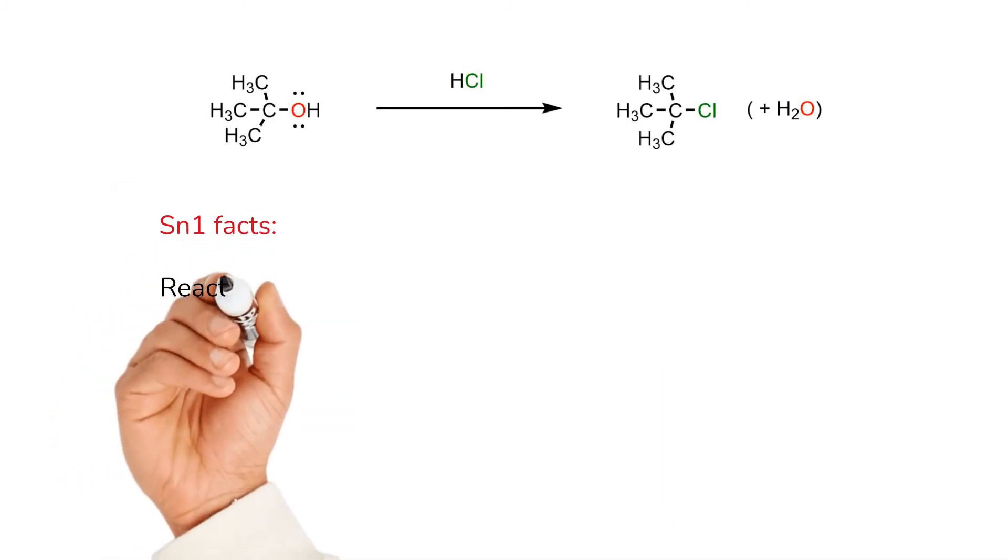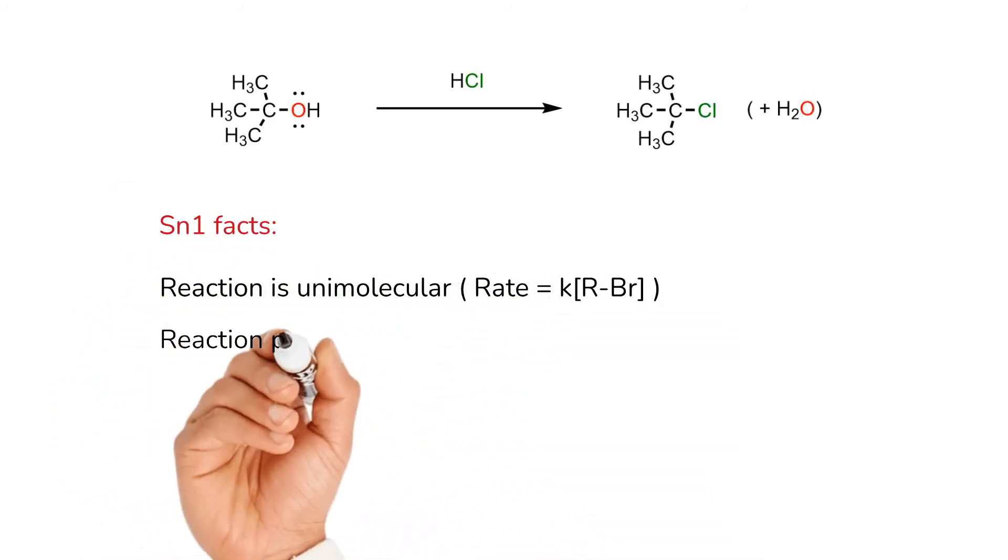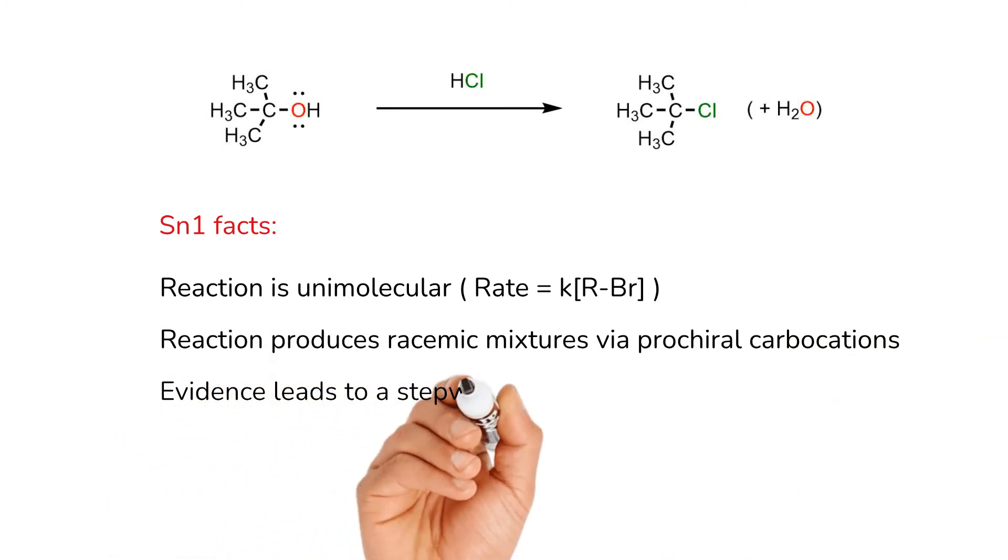In summary, the reaction between the tertiary alcohol and a powerful halide acid produces the tertiary alkyl halide. It is understood that the rate determining step is the unimolecular formation of a carbocation, which is then trapped by the nucleophilic halide in what is overall an SN1 reaction.